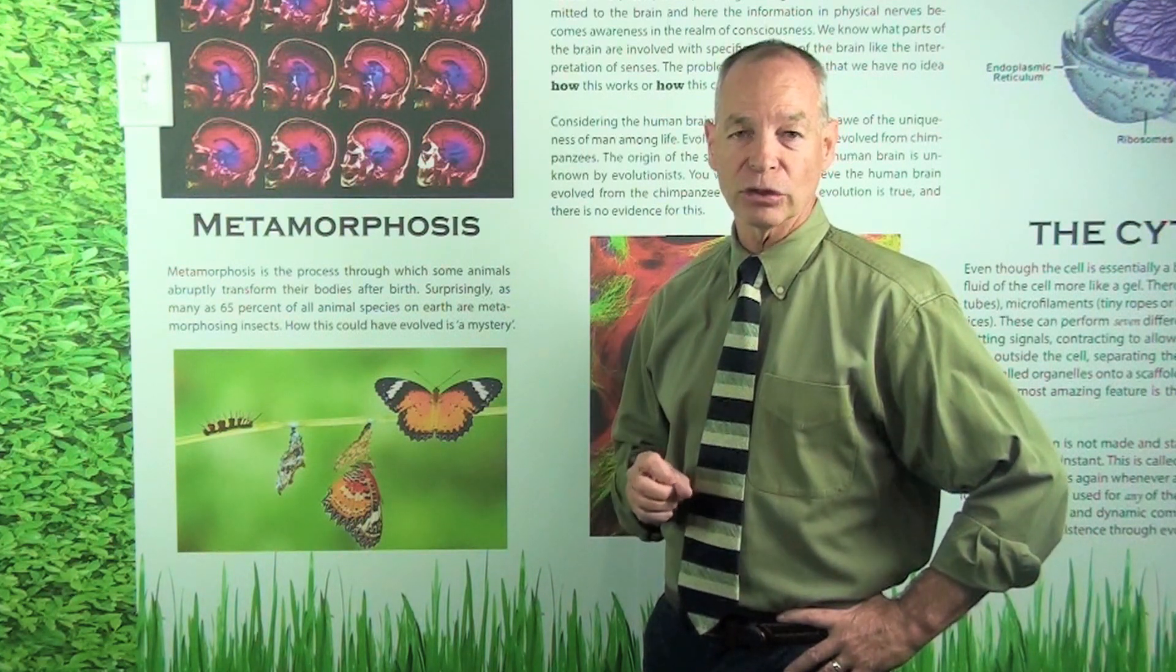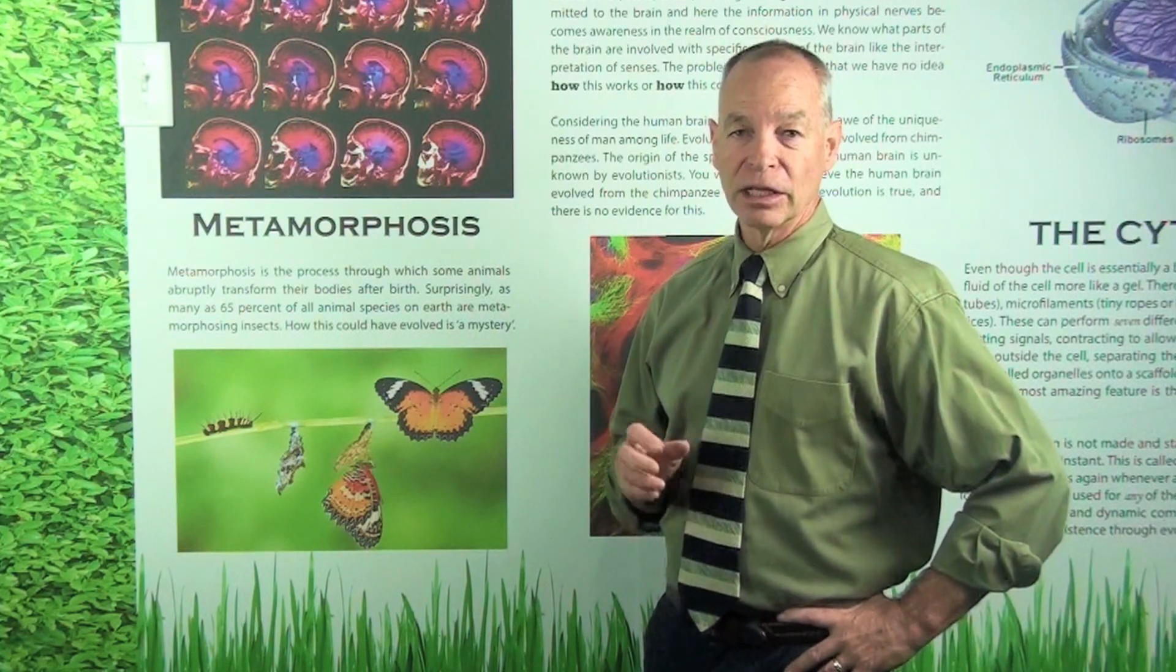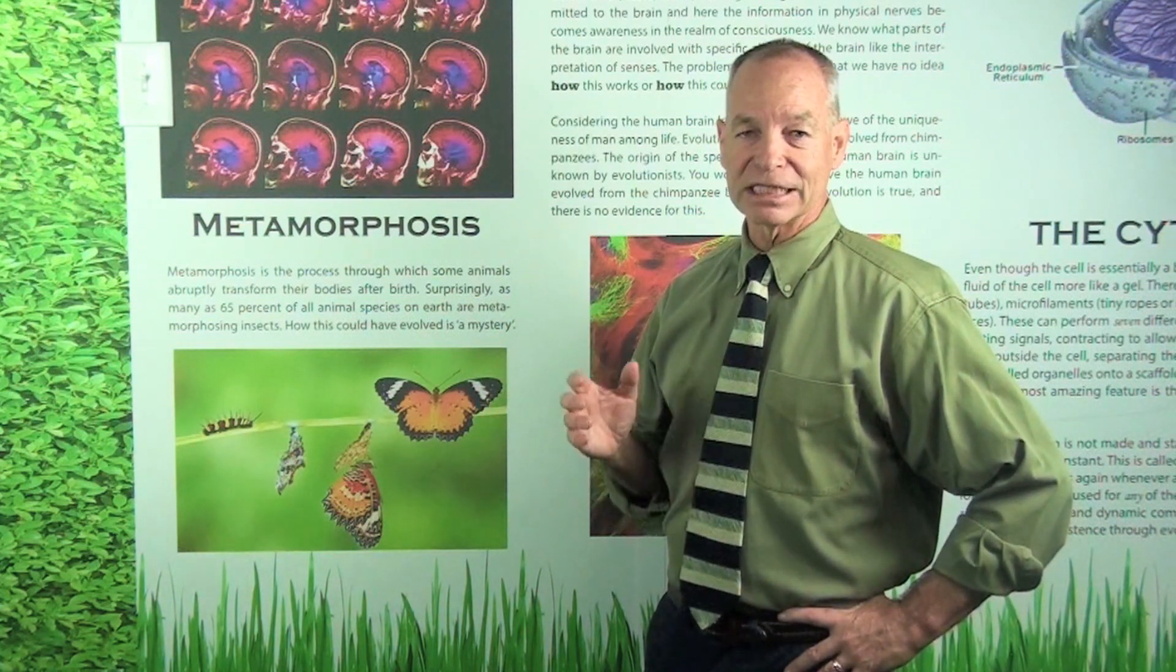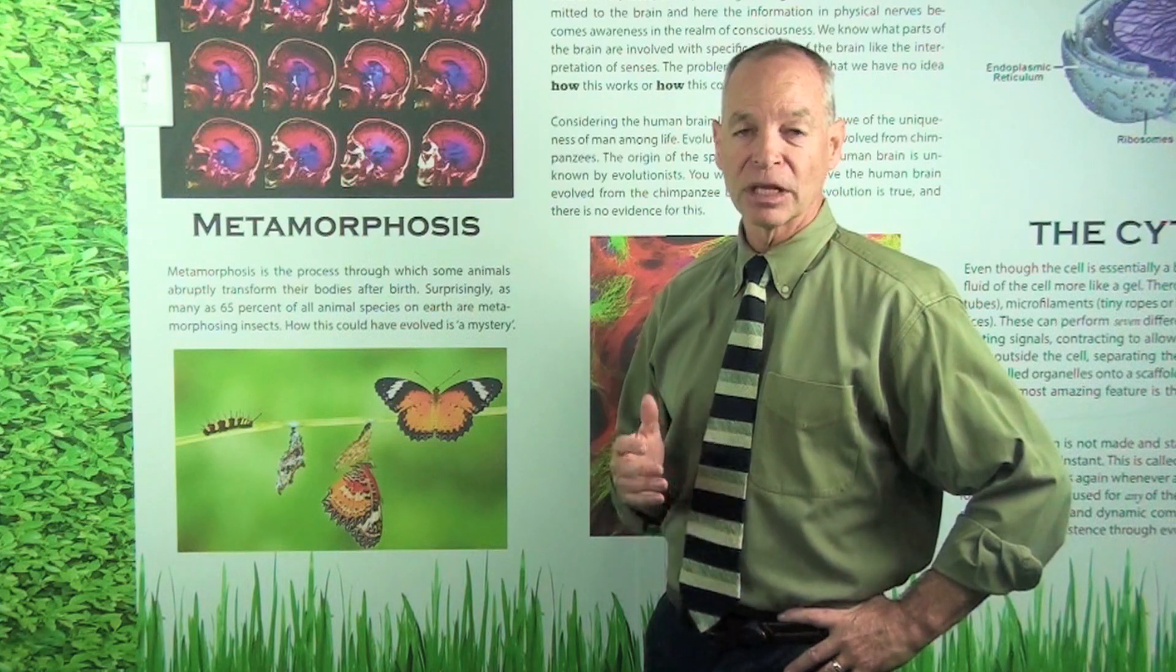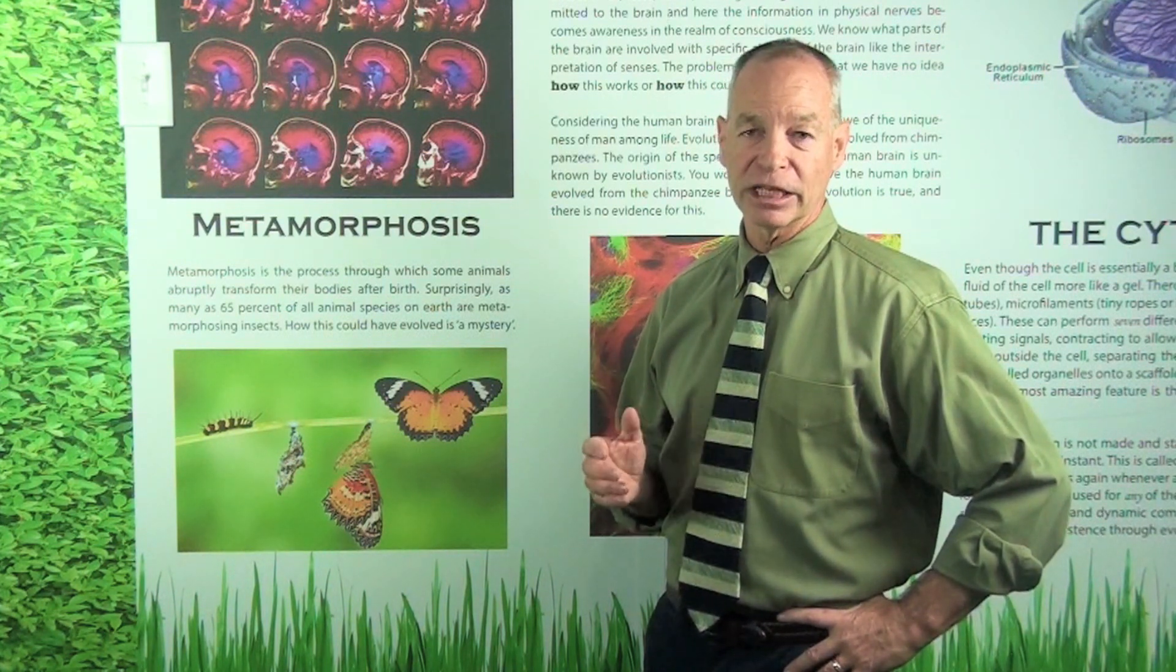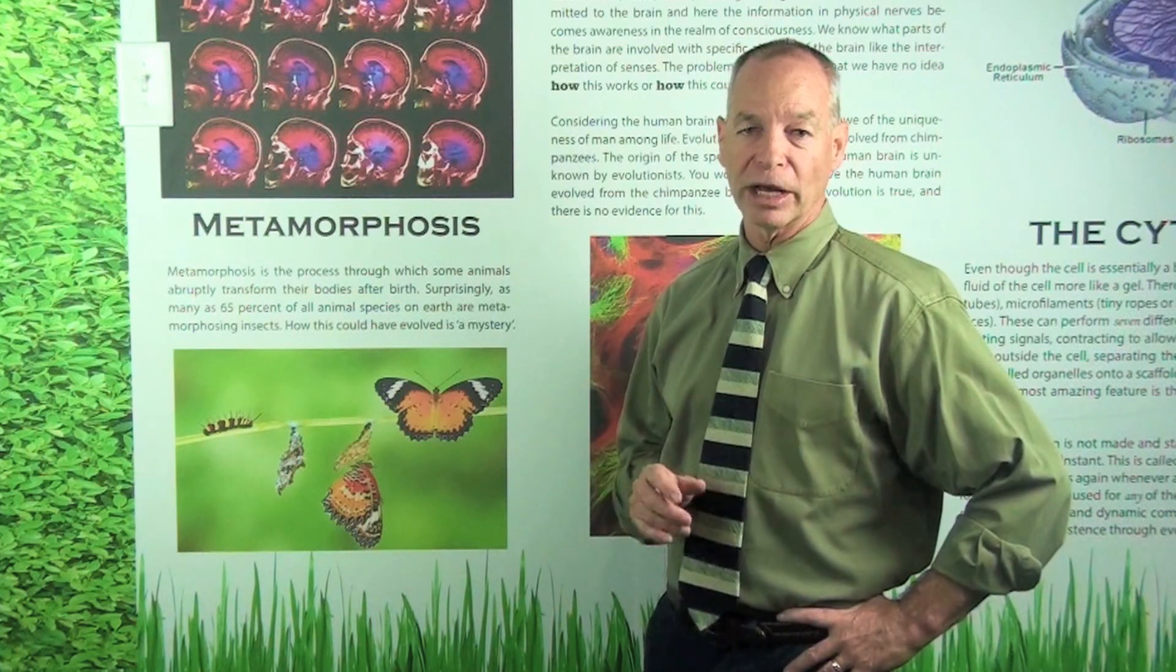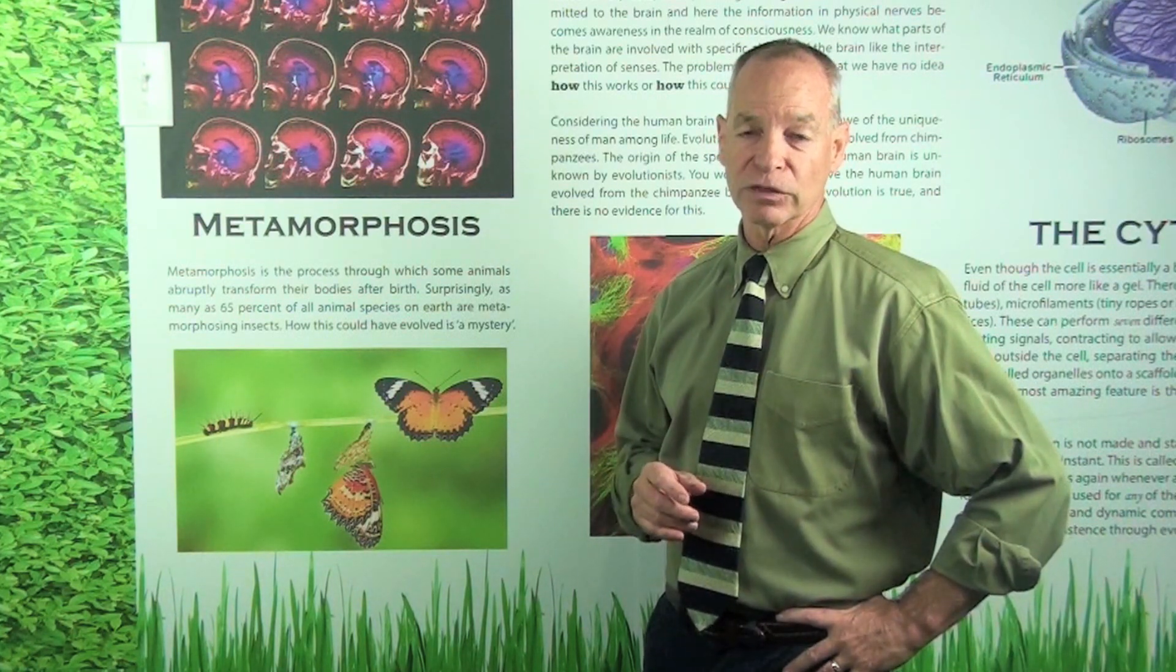In their own scientific journals, it's called a mystery. The worm that's transforming its body through metamorphosis into a butterfly is just one common example. But as many as 65% of the land animals are these insects that are able to transform their bodies through the process of metamorphosis.